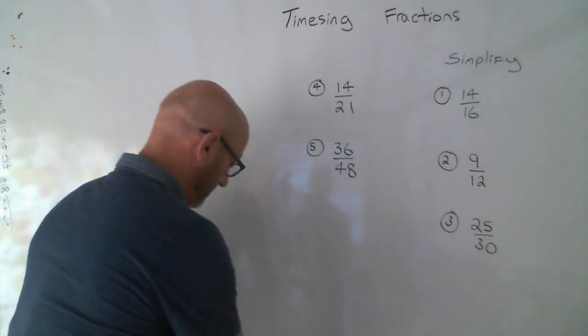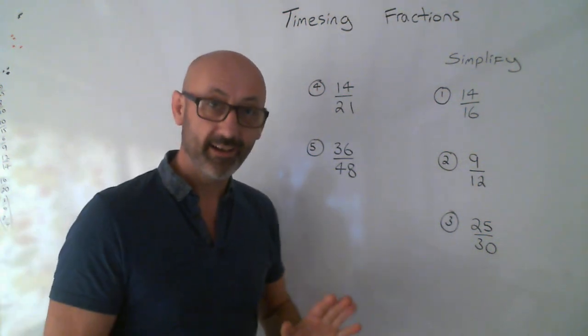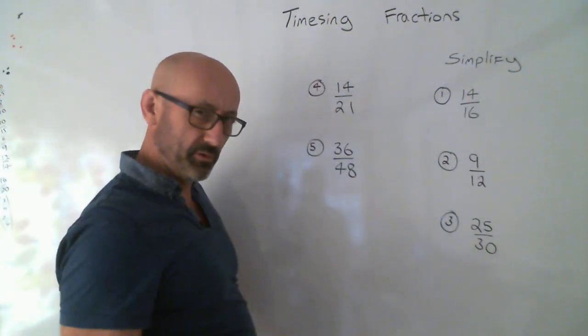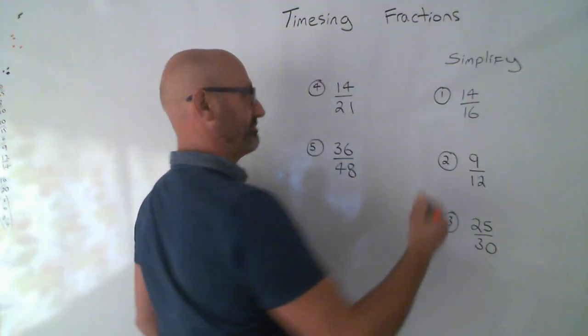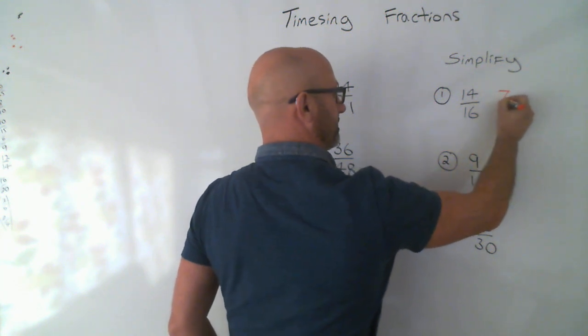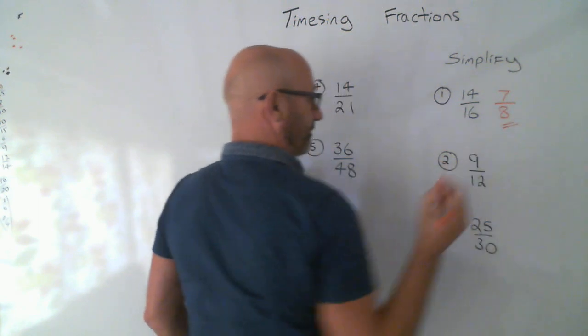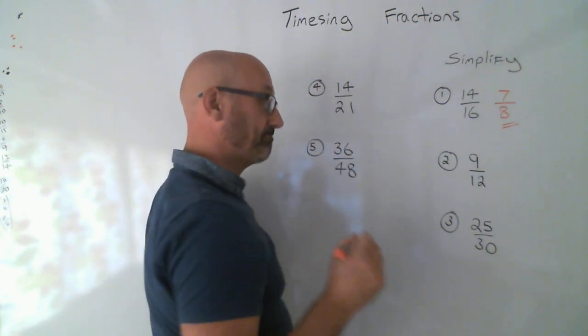The answers are: divide by 2. What goes into the top and bottom? It's 2. 2 fits into 14 seven times. 2 fits into 16 eight times. Did you get that one right?